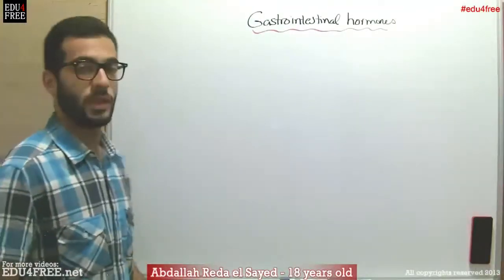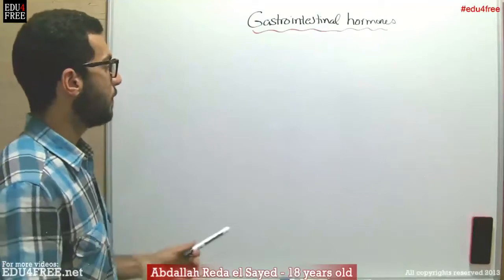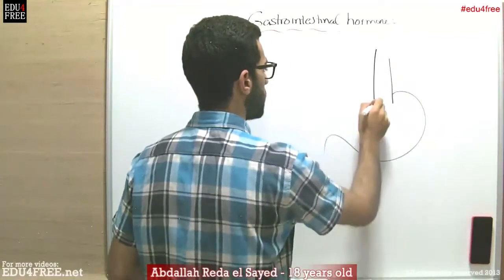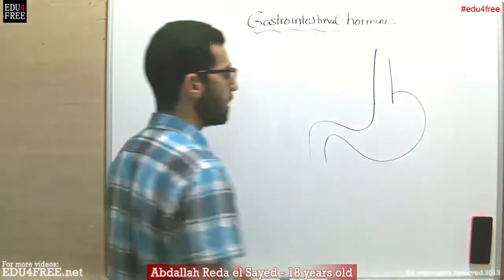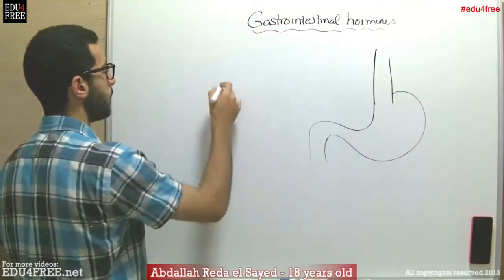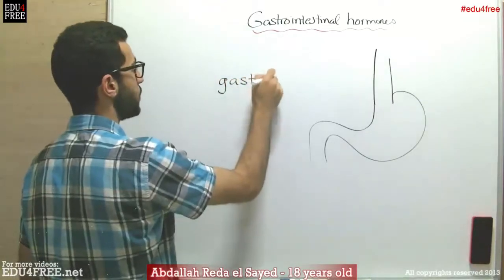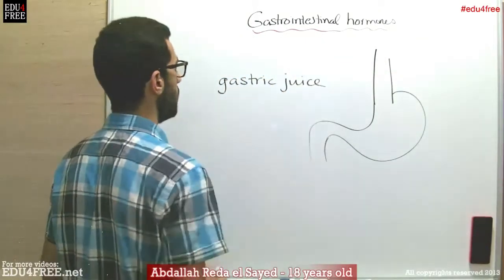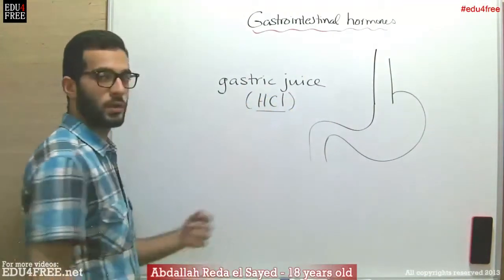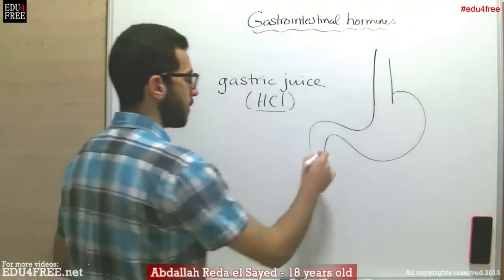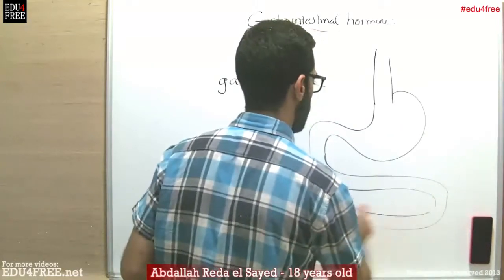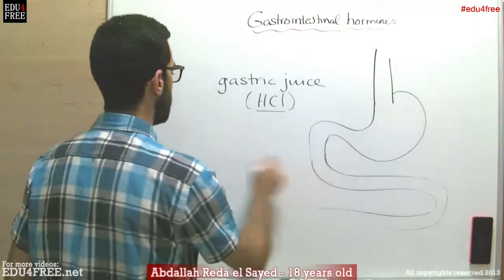We are going to talk about the gastrointestinal hormones. Previously, we knew that the stomach has secretions — for example, the gastric juice, which mainly contains hydrochloric acid for the conversion of pepsinogen into pepsin and so on. Relatively, the intestines also have secretions, known as the intestinal juice.